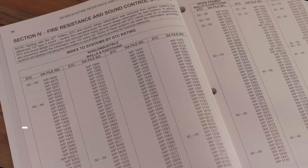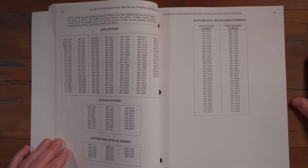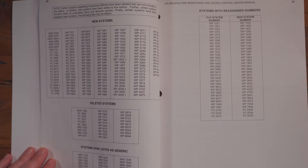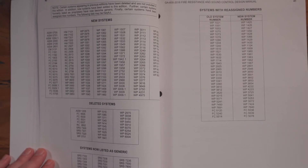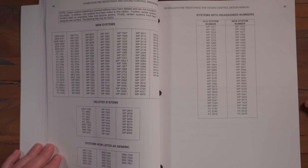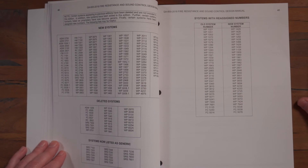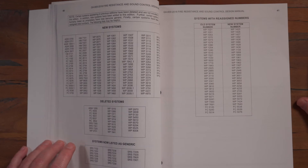Section 4: Fire Resistance and Sound Control Systems Index. This section contains the Index to Systems by STC rating, which helps narrow down selections and can save significant time. With the expansion of GA600 and additional sound testing, new tables are included on pages 40 and 41. Approximately two dozen systems have new GA file numbers, created to maintain the book's organizational structure. Where a file number has been reassigned, a new table allows readers to easily identify an assembly's new file number. Additional tables note new and deleted systems, as well as systems that were previously proprietary but are now considered generic.